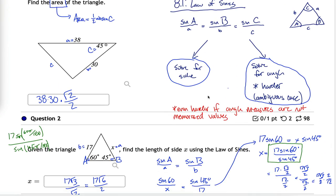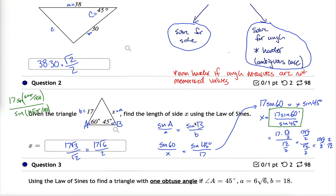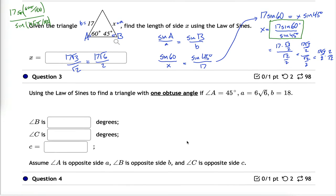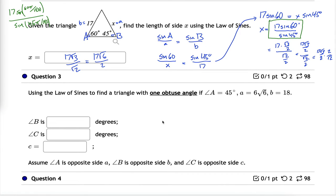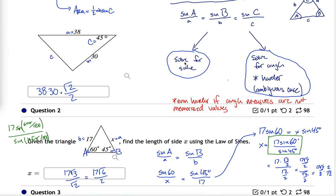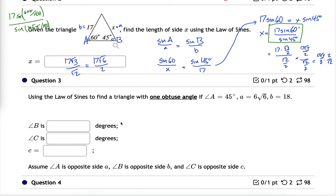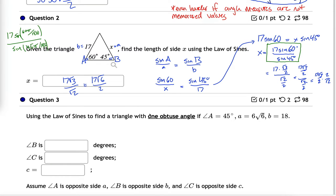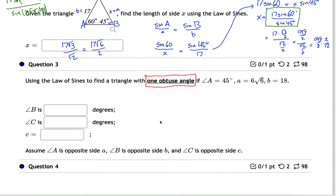That's problem two done. Problem three is a little bit harder because we have to solve for angle measures instead of a side length. Furthermore, there's a trick where one of the angle measures is obtuse.